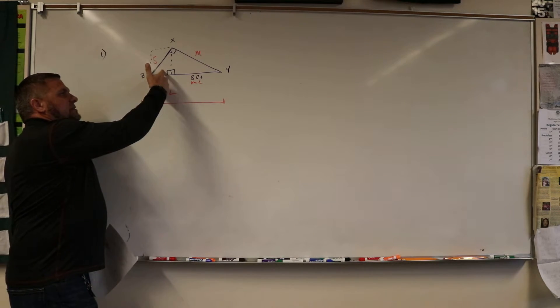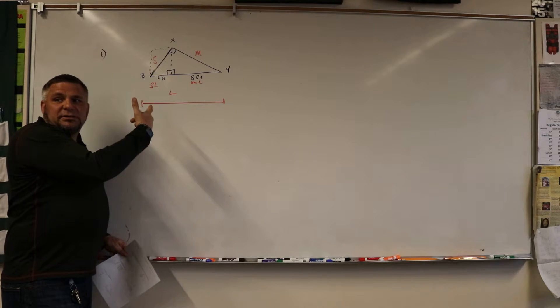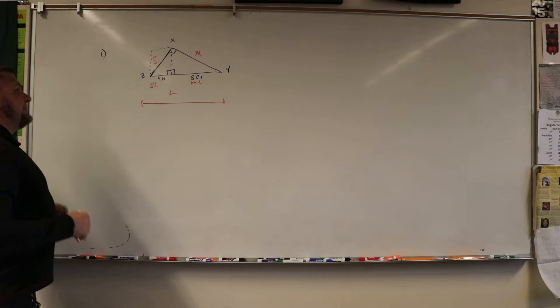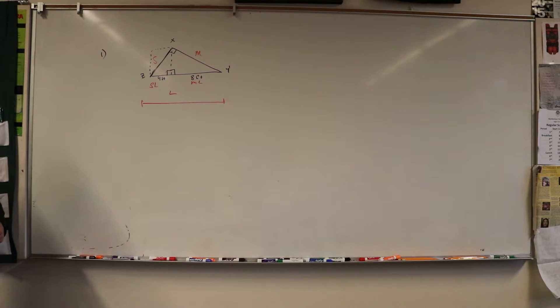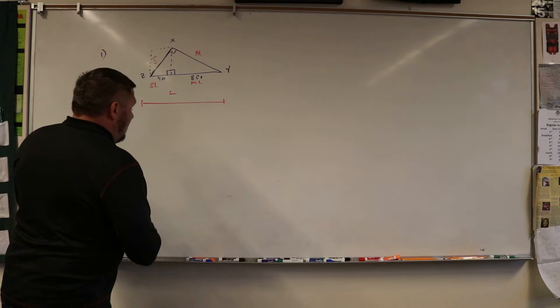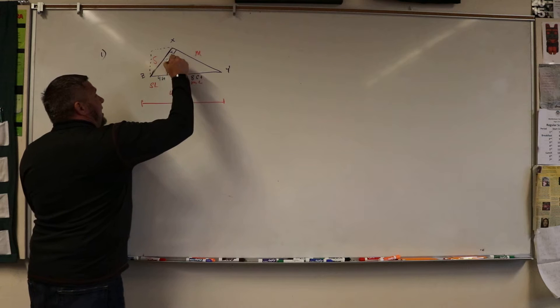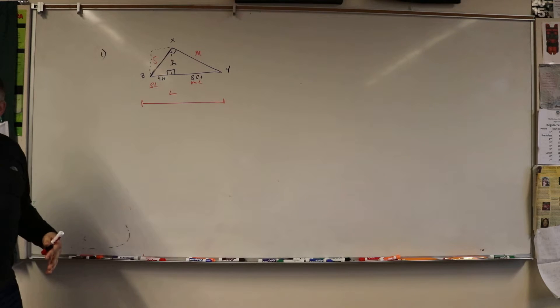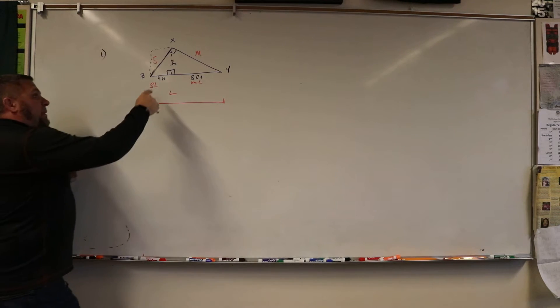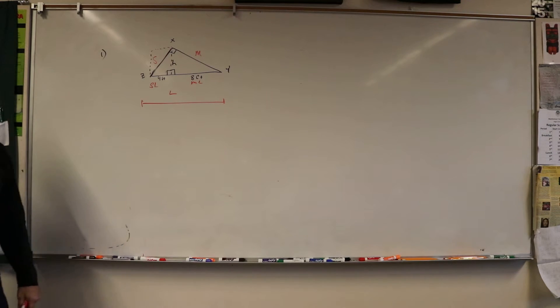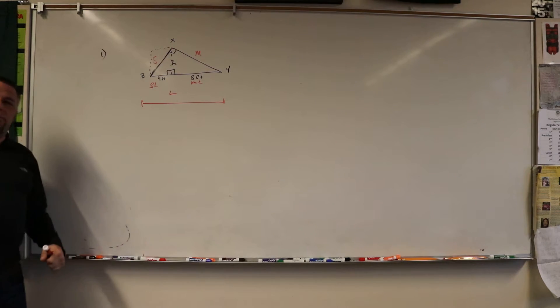Now the key here is there are certain formulas. If you want to know this height, we're always going to call this the height, H. The height is the perpendicular distance from the base to the top of the triangle.